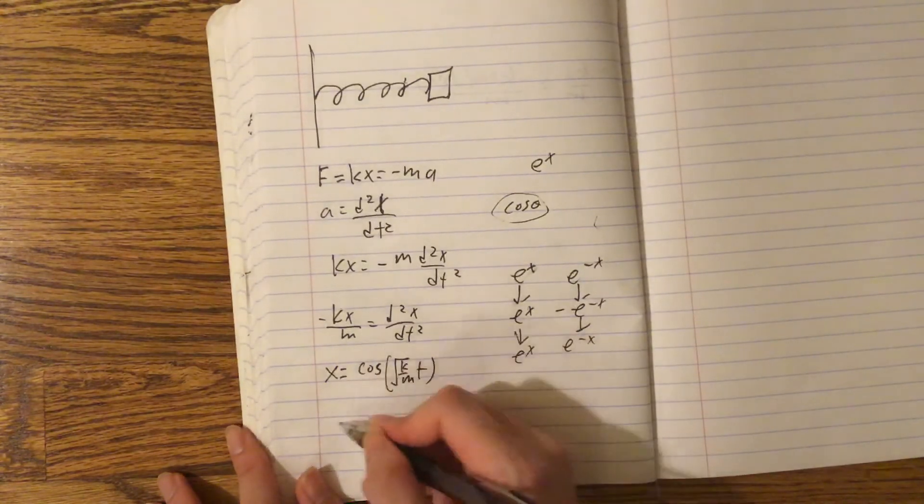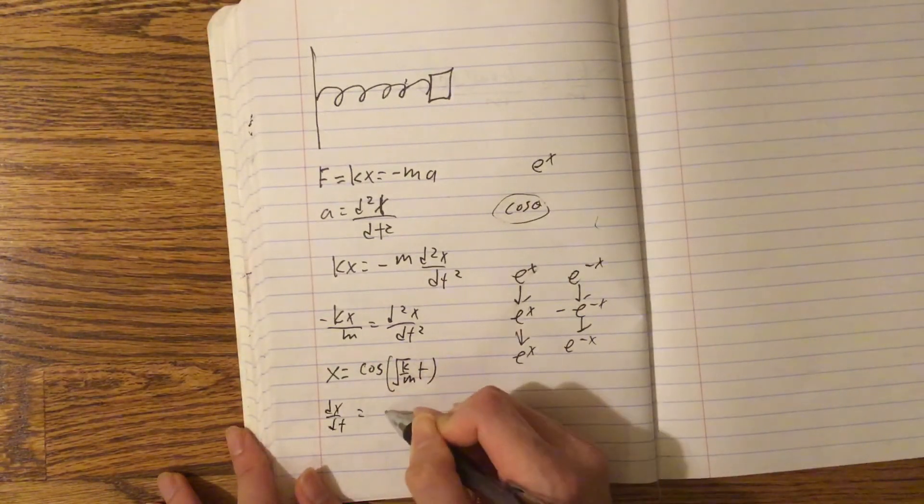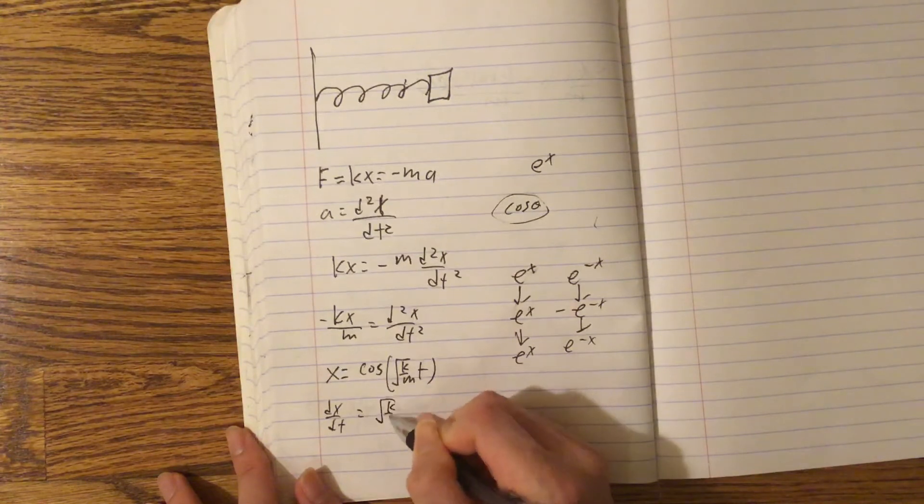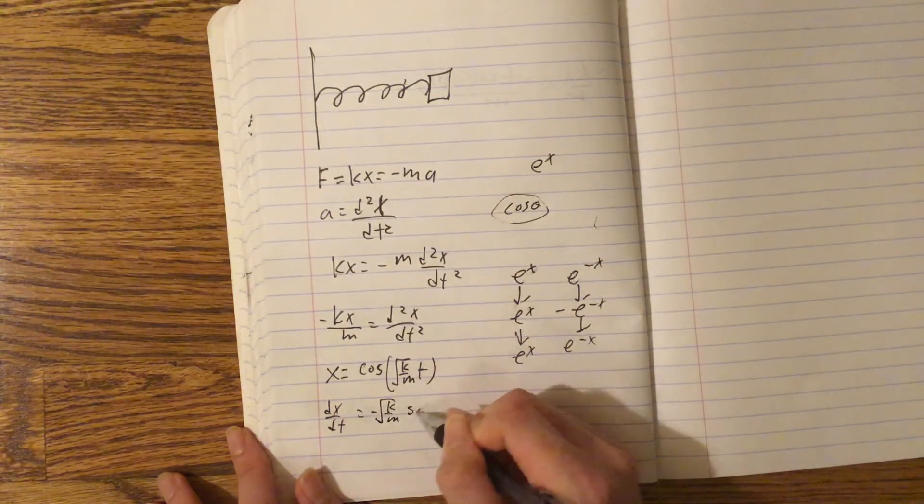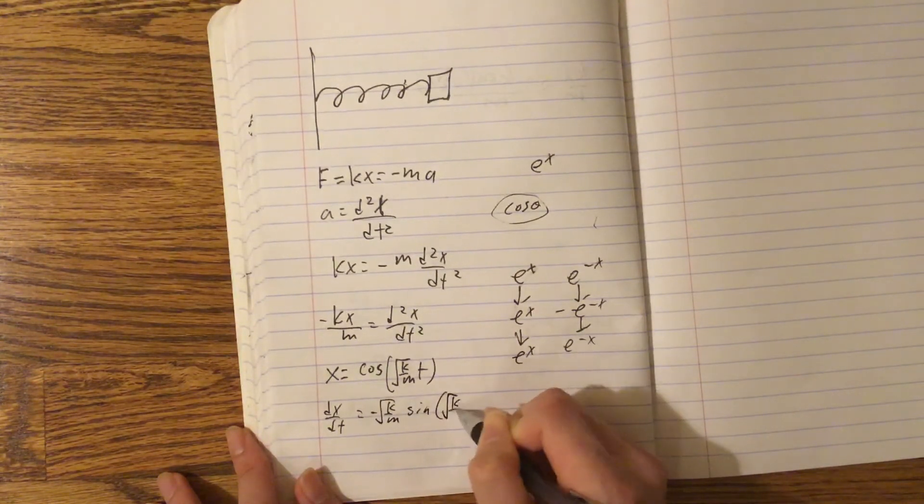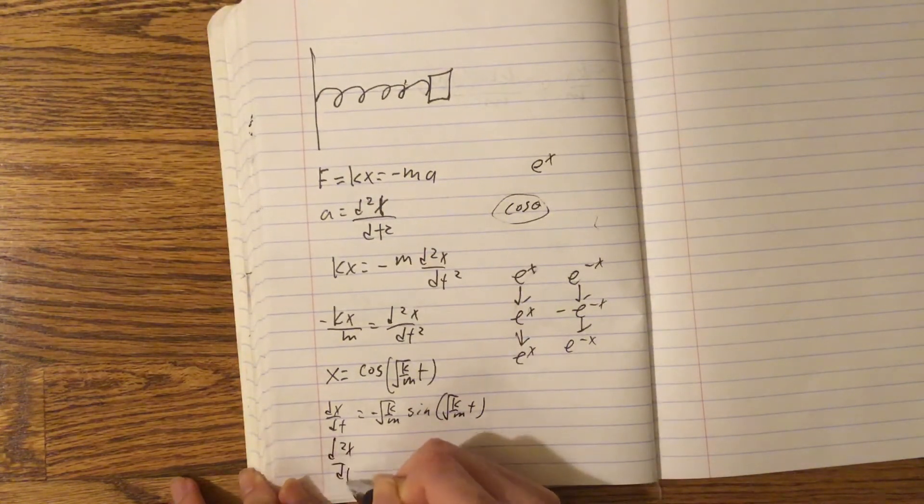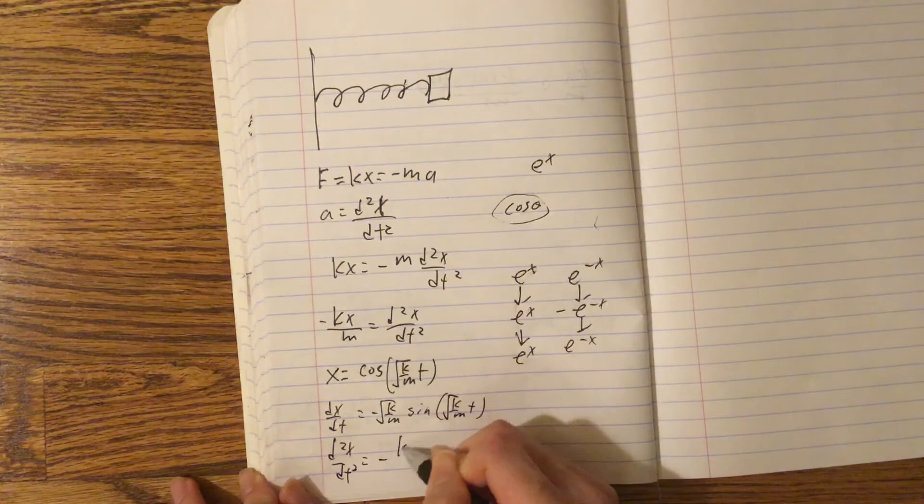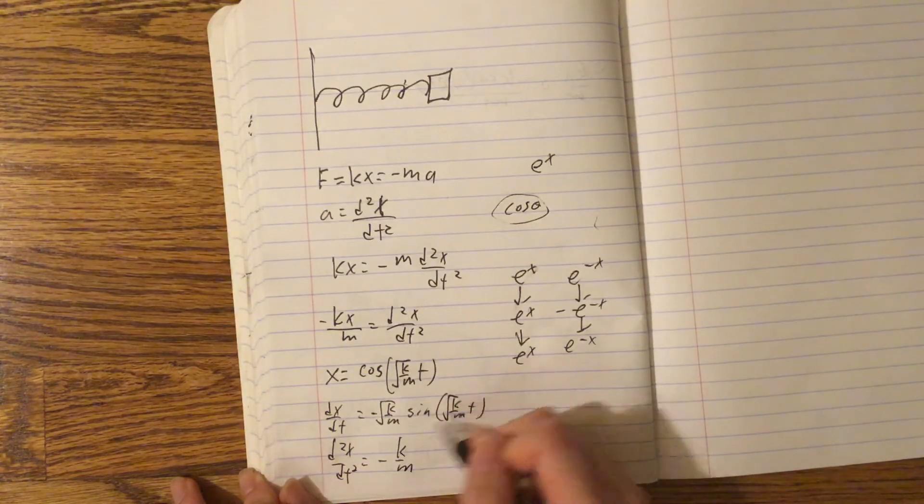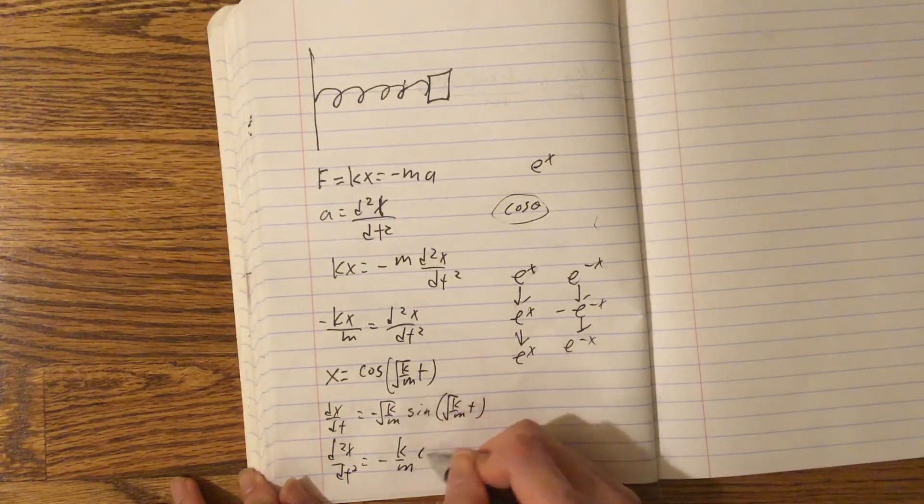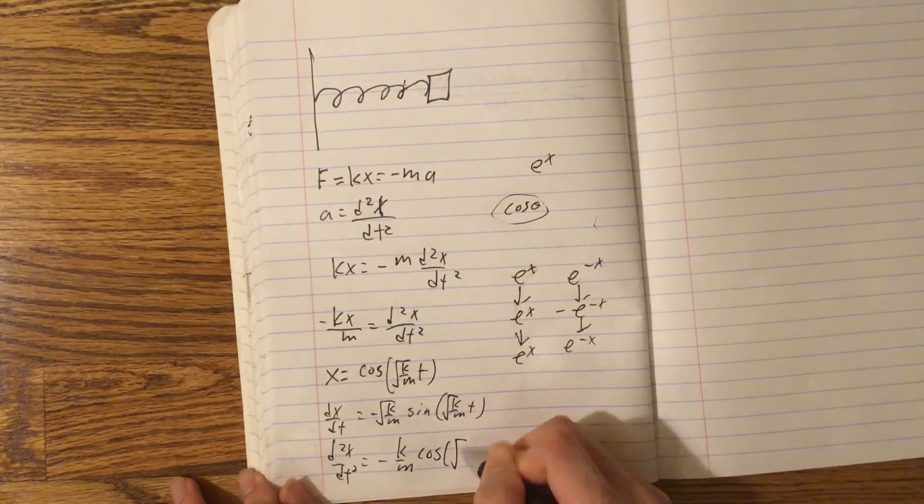Let's take a derivative of this. So, dx dt equals root k m by chain rule, negative sine root k m t. And the double derivative would be negative k m, because root k m times root k m is just k m, cos root k m t.